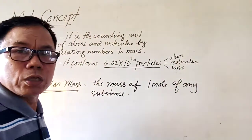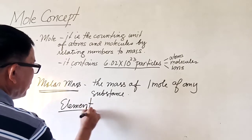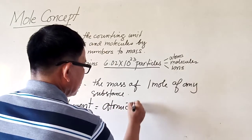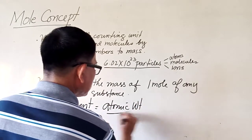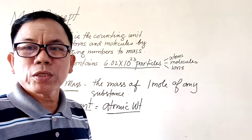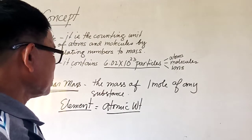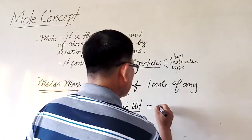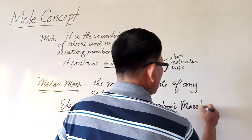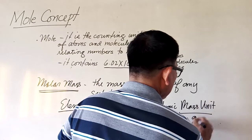Let us consider elements. Take note that elements have their own atomic weights. We already discussed the definition of atomic weights when we discussed the periodic table. The atomic weight is expressed using the unit atomic mass unit, but it may also be expressed in terms of grams.